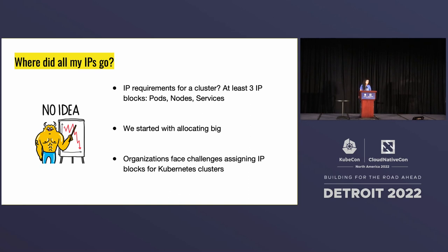So what are those IP requirements for a cluster? Well, there are at least three big IP blocks that are required when you're building a Kubernetes cluster: the first for pods, also for nodes, and then finally for services. Since the early days of Kubernetes, when we build a cluster, we assign large blocks for these Kubernetes constructs, because we didn't have a great way to adjust cluster-wide allocations back in the day. But this, in turn, caused organizations to face challenges when they assign networking IP ranges to Kubernetes operators.